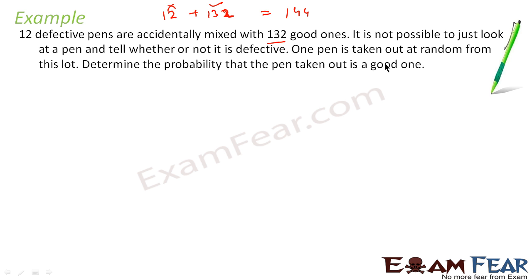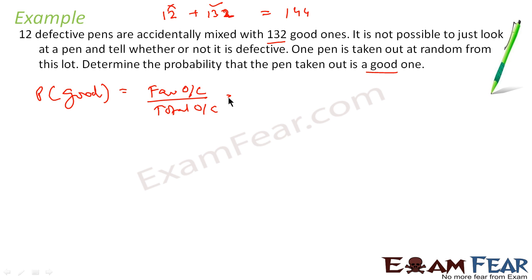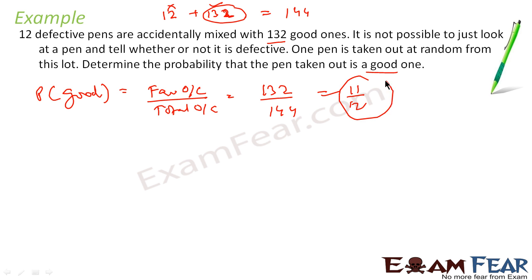We have to find the probability that it is a good one. Probability of good = favorable outcome / total outcome. The favorable outcome for good is 132, because there are 132 good pens. Total outcome is 144. So this becomes 132/144 = 11/12. This is the probability that the pen drawn is good.